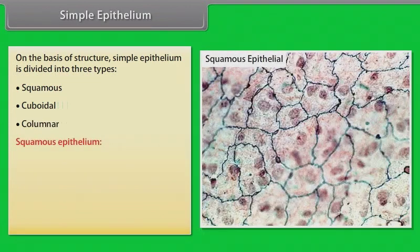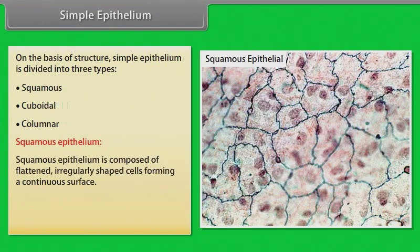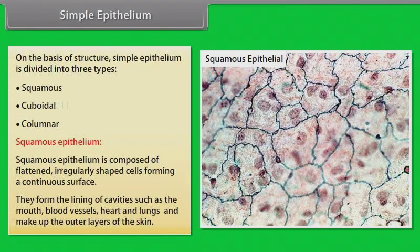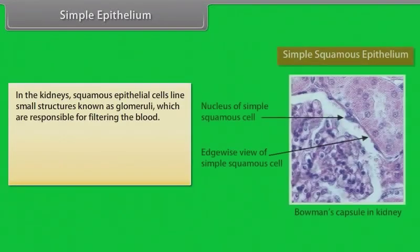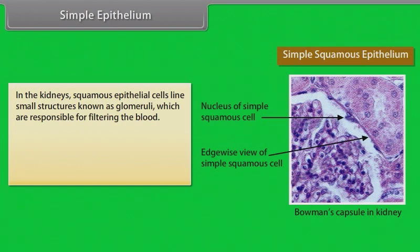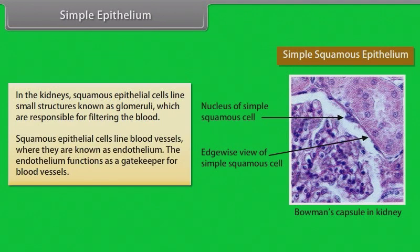Squamous epithelium is composed of flattened, irregularly shaped cells forming a continuous surface. They form the lining of cavities such as the mouth, blood vessels, heart and lungs, and make up the outer layers of the skin. In the kidneys, squamous epithelial cells line small structures known as glomeruli, which are responsible for filtering the blood. Squamous epithelial cells line blood vessels, where they are known as endothelium. The endothelium functions as a gatekeeper for blood vessels.